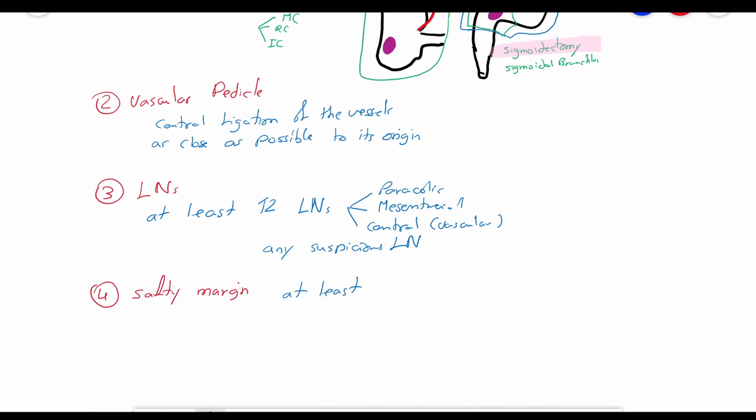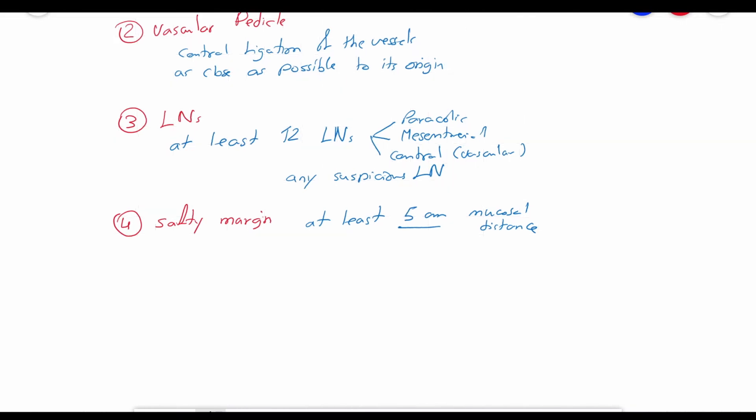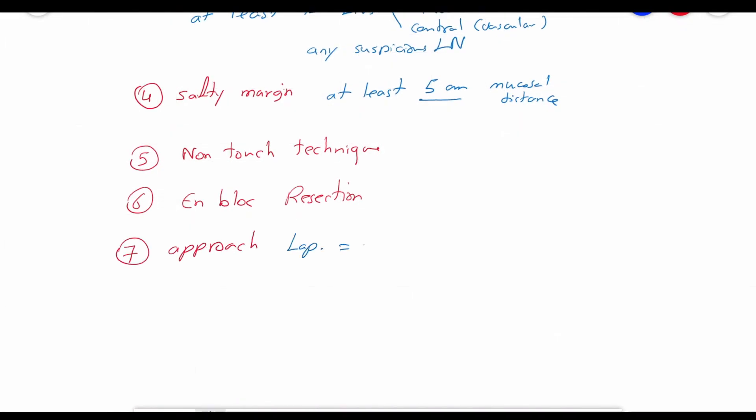The fourth rule is the mucosal safety margin, which should be at least 5 cm between the tumor and the resection line, preferably 10 cm when possible. Number five, an untouched technique should be used with number six, which is an en bloc resection to avoid local tumor spread or peritoneal seeding.